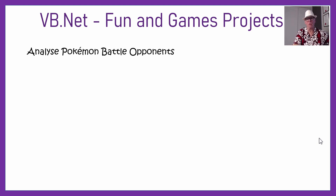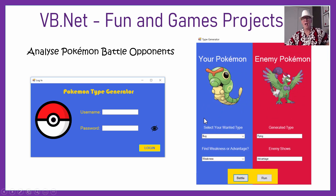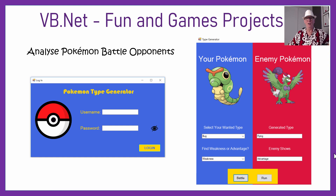Here's some that our students have done for projects that we thought are interesting and might be part of the fun and games course. The first is Analyze Pokemon Battle Opponents — you pick the Pokemon you're going to use, then find a Pokemon that yours is weak against. You click 'weakness' and then 'battle' and it shows you the flying one which has an advantage over your one. If you pick strength, it'll show you a Pokemon which is weaker than yours. So it's a Pokemon strength learning exercise and program picker — a bit of fun if you really like Pokemon.